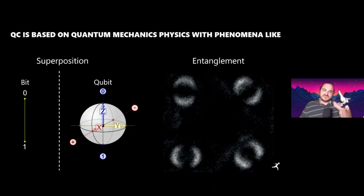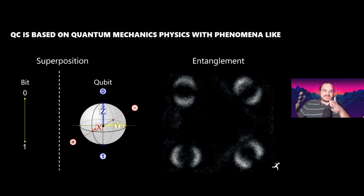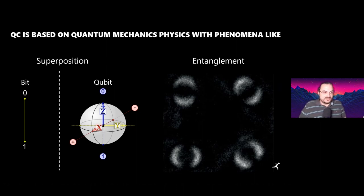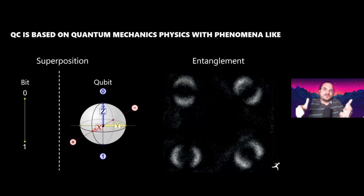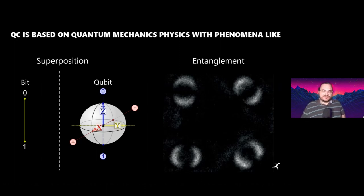Superposition can only be held for a very short time — nanoseconds to milliseconds — and extending that coherence time is a big challenge for quantum computers. Once you measure the result, superposition collapses — this is the Schrödinger's cat principle: you only know the state when you measure it. Until then, you can assume it's in all states simultaneously. This is important later when we discuss quantum key distribution.